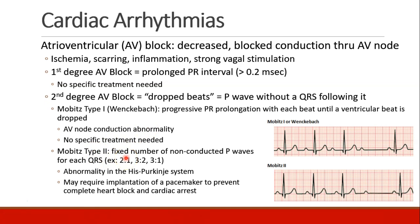Mobitz type 2 second degree AV block is a little different. These patients have a fixed number of non-conducted P waves for each QRS, so we describe it as a 2-to-1 or 3-to-2 ratio. This is an abnormality below the AV node in the His-Purkinje system. These patients often require implantation of a pacemaker to prevent complete heart block and cardiac arrest. We see the same PR, same PR, same PR, then a dropped beat — a P but no QRS. So this would be 3 conducted and then 1 dropped.